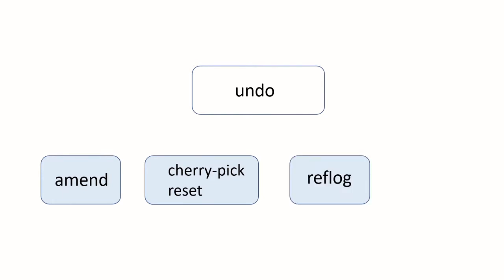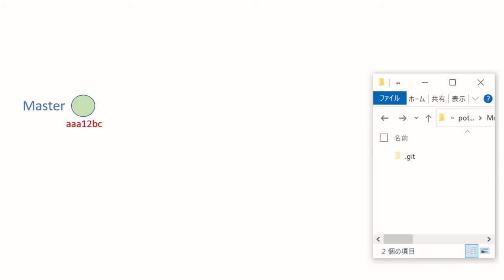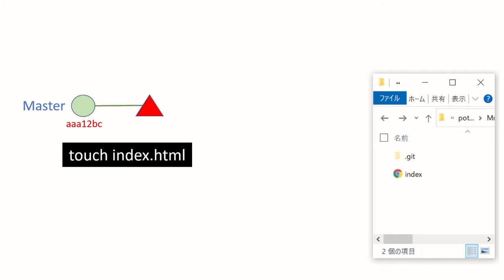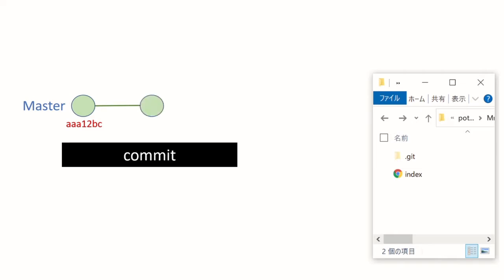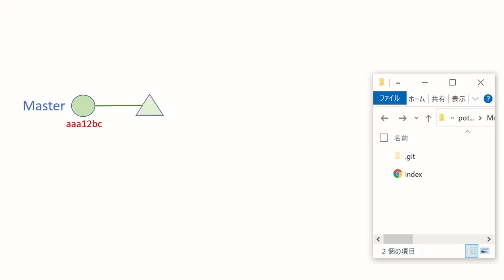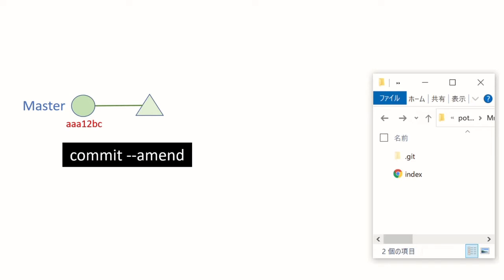The first is amend, then cherry-pick, reset, reflog, and revert. These are the four types of undo commands and I'm going to show you today. First I will show you what amend is. Here we have this master branch with the initial commit — it's aaa12bc. We are adding a new file index.html in the working area, we add it to the staging area, and we commit it. But actually we don't want a new commit. We want this index.html to be part of the same commit as the initial commit. So after we add the change to the staging area, we can use the amend command.